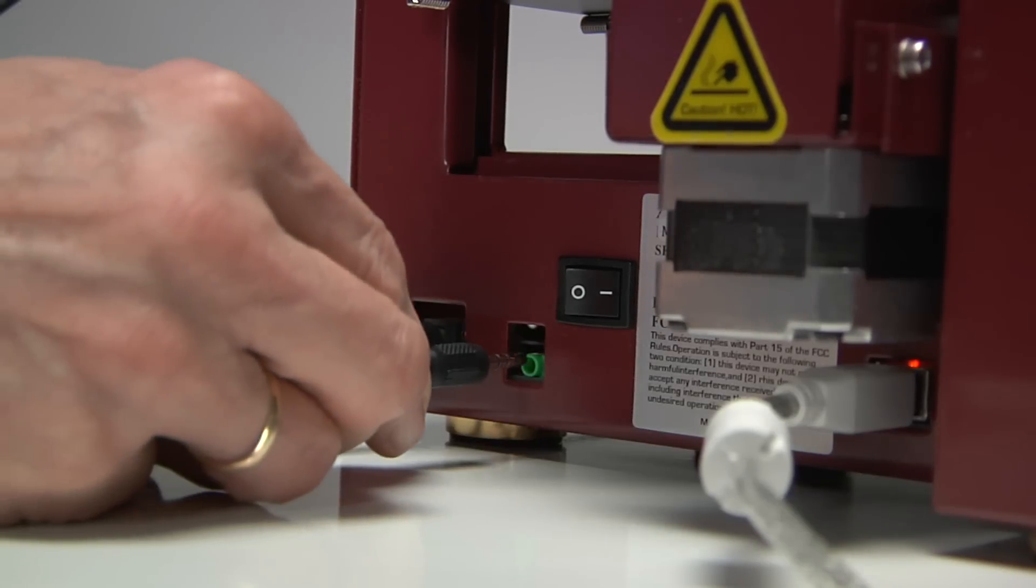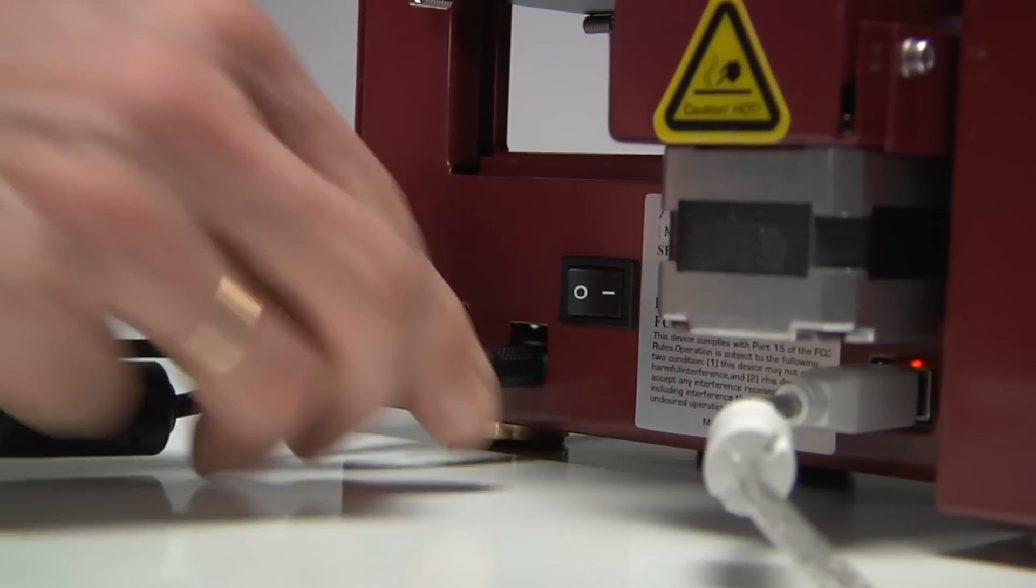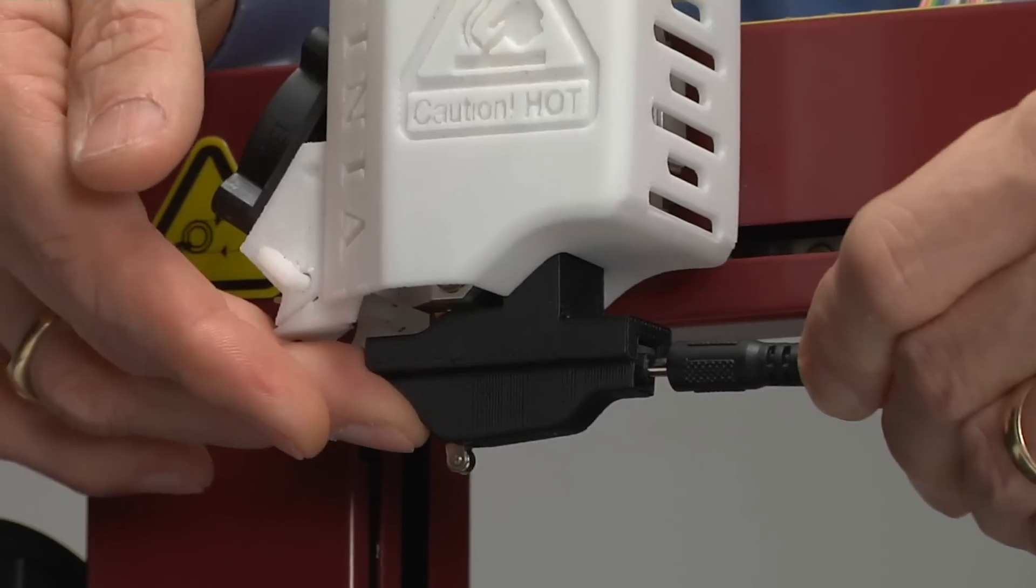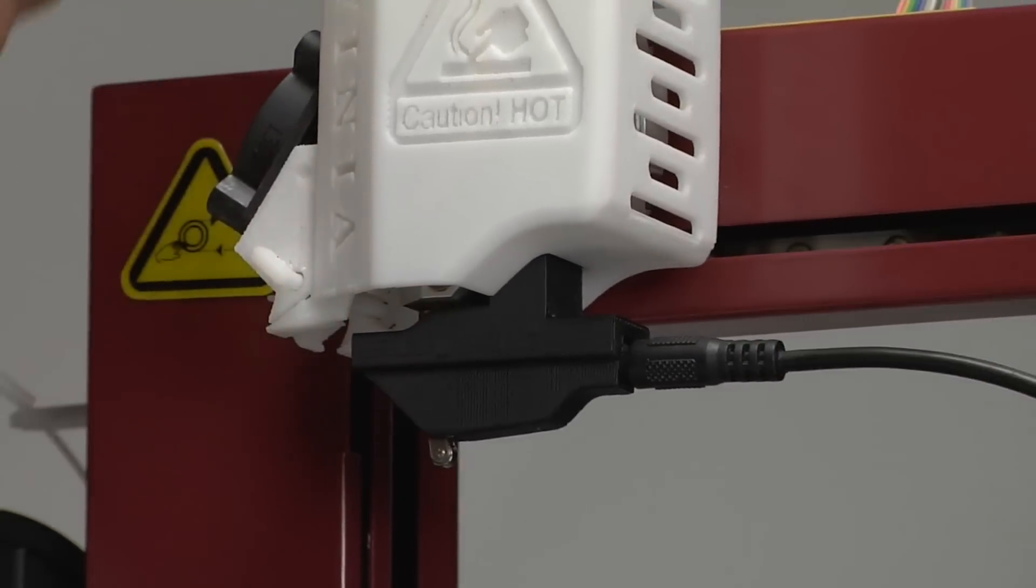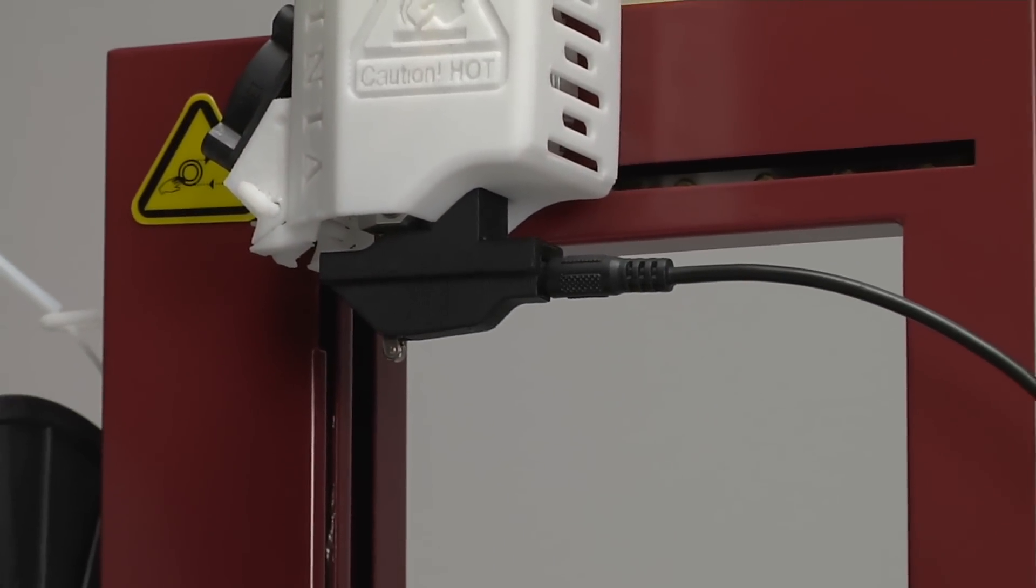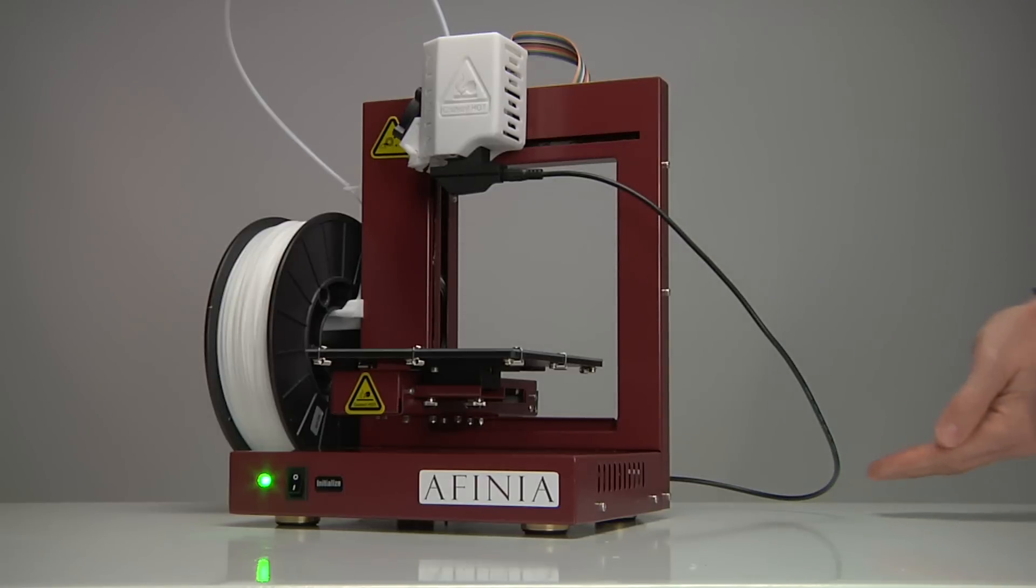Plug one end of the data cable into the green connection on the back of the printer and the other end into the platform calibration probe, making sure the data cable is routed around the right side of the printer and not through the printer frame.